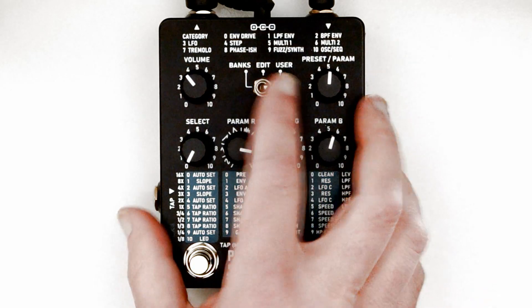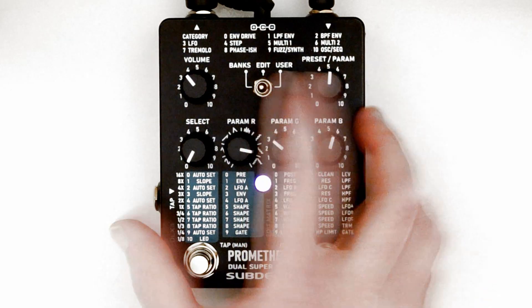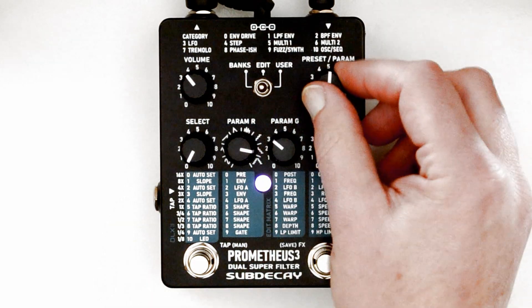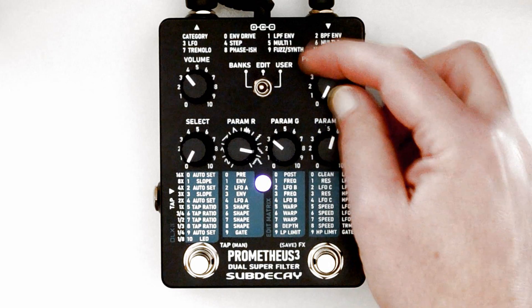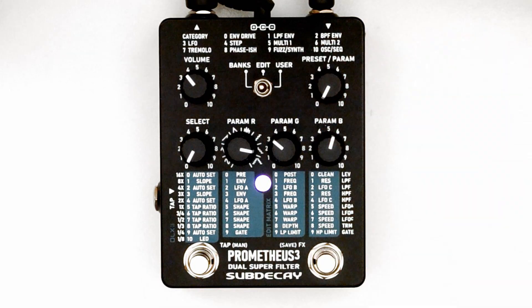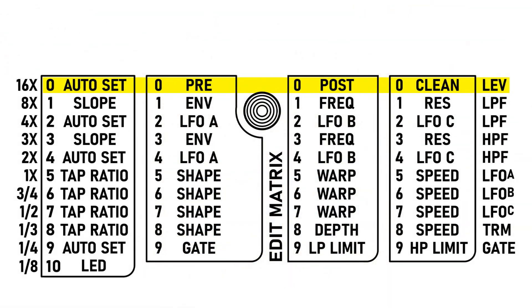To edit presets, flip the switch to edit mode. Then select the row you want to edit with the preset param knob. We'll start with row 0 for levels.